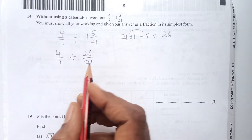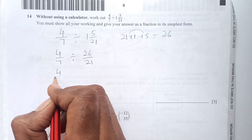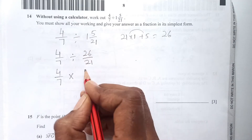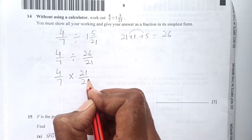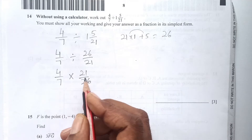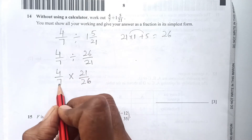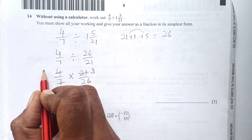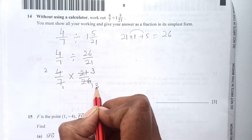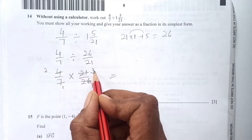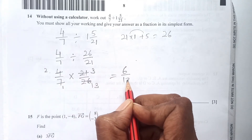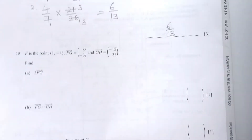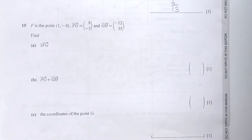We keep 4 over 7, change the division to multiplication, and take the reciprocal: so this becomes 21 over 26. Now we simplify — 7 goes into 21 three times, and 2 goes into 26 thirteen times — so we are left with 2 times 3 over 13, which is 6 over 13. The final answer is 6 over 13.